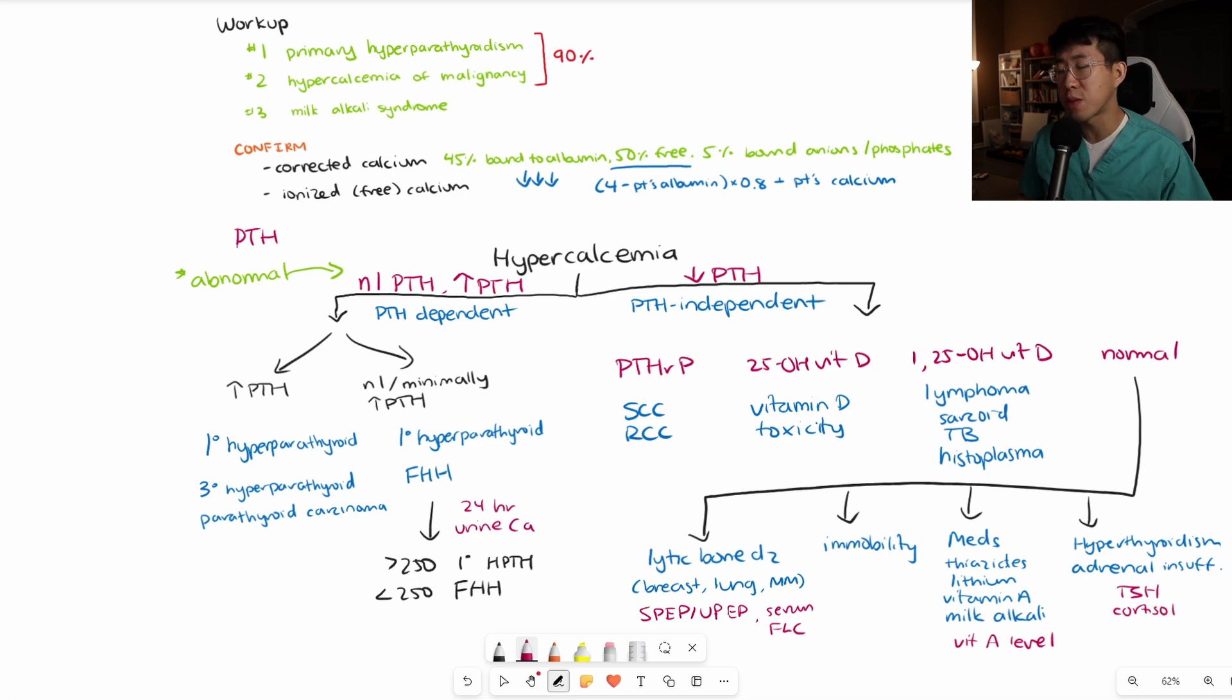Everything that you can order as part of your workup, I've actually put in this pinkish purple color. First pass, you're going to get that PTH to determine if it's PTH-dependent or PTH-independent. If it's PTH-dependent, depending on if it's normal or minimally elevated, you may also get a 24-hour urine calcium. But a majority of the time, you're just going to be in this primary hyperparathyroid category. For PTH-independent, you're going to get PTH-RP, 25-hydroxyvitamin D, and 1,25-hydroxyvitamin D. If all of that's normal, you have some additional workup to work up these causes.